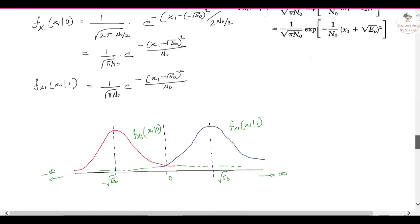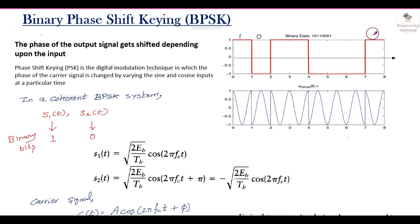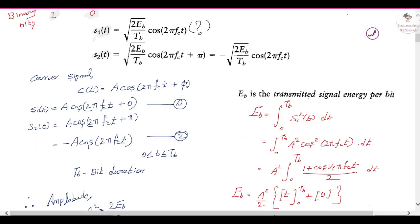In binary PSK, two information bits are transmitted: bit 1 and bit 0. These are the message signals. Bit 1 is represented by the signal s1(t) and bit 0 is represented by s2(t). s1(t) = √(2Eb/Tb) · cos(2πfc·t), and s2(t) is the negative value of that signal. The carrier signal carrying the information bits is c(t) = A · cos(2πfc·t + φ).